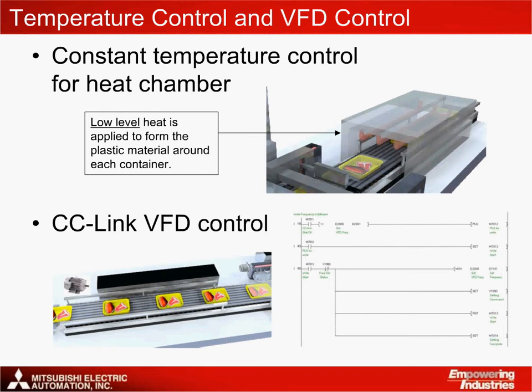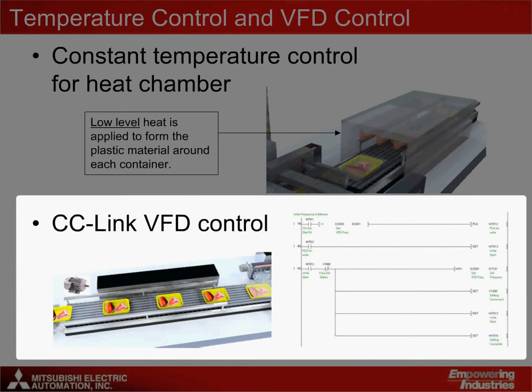For driving the main conveyor, the PLC is set up to communicate with an E700 VFD via a CC-Link connection. Specific code in the PLC in conjunction with an HMI interface allows you to easily change the drive speed, acceleration, deceleration, and just about any other VFD parameter.